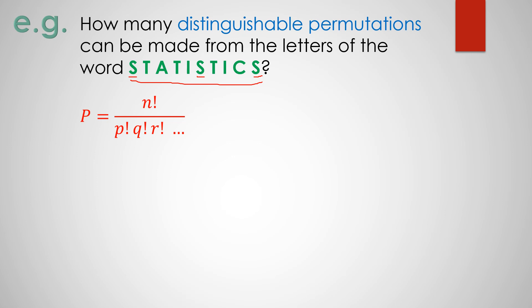So what is our n? n is the number of elements from our given set. Counting: 1, 2, 3, 4, 5, 6, 7, 8, 9, 10. We do have 10 elements, so our n is 10.